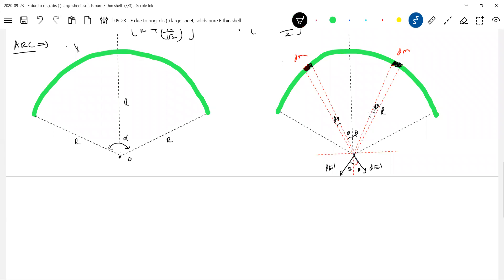So first you define what is dE dash, g dm by r squared. Because both elements are at equal distance. Because O is what? O is a center. O is what? O is a center of arc. Now we'll proceed, you know.